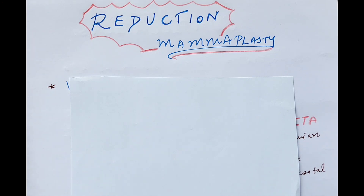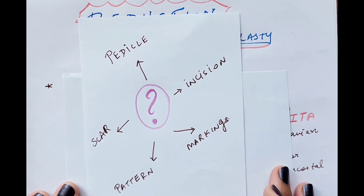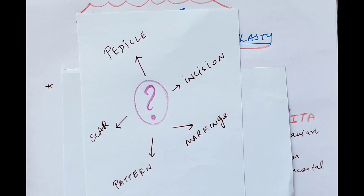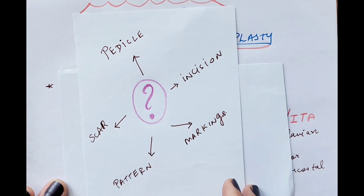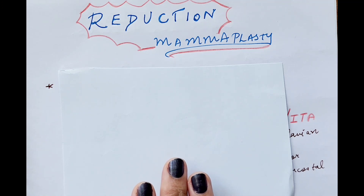So why is there so much confusion on breast reduction or reduction mammoplasty? There are a lot of things to consider. When we see this topic we get confused about what is the pedicle, what is the incision, what is the marking, what is the pattern of the technique, what is the final scar, and there are various author names associated with these procedures. We're going to go through all these terminologies bit by bit, and to understand that we need to go back to basics — the vascularity on which all the pedicles are based.